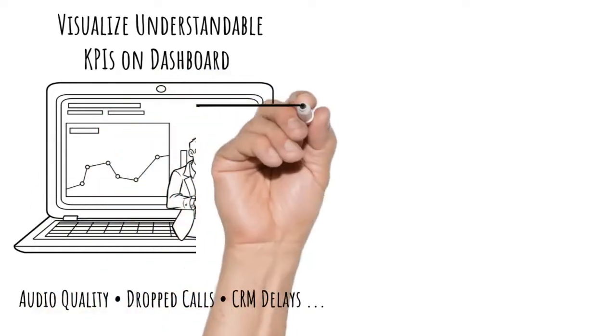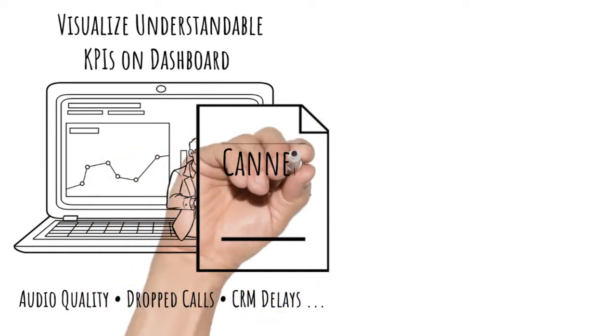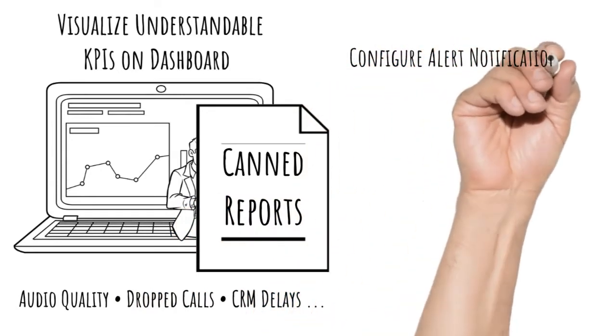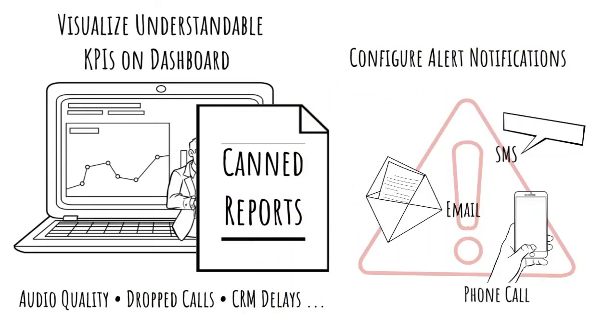The KPIs can be instantly visualized on a real-time dashboard or summarized with a number of canned reports. You can configure alert notifications to receive a text message, email, or even a phone call if any of the critical thresholds are exceeded.